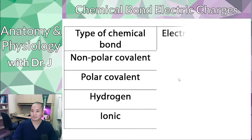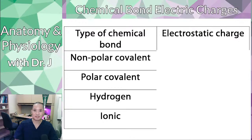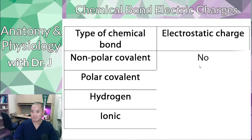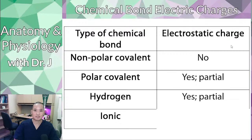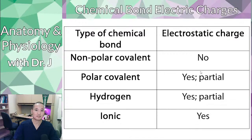Looking at types of chemical bonds: covalent bonds can be subtyped into nonpolar covalent and polar covalent. Nonpolar covalent bonds are where electrons are equally shared — like in O2 or H2 — so there's no overall electrostatic charge. Polar covalent bonds have a slight electrostatic charge at different atoms of a molecule, as in water where oxygen is slightly negative and hydrogen slightly positive. Hydrogen bonds involve an electrostatic charge between two different molecules rather than within one. Ionic bonds involve full ionic charges — always some integer like plus one, plus two, negative one, negative two — never partial.